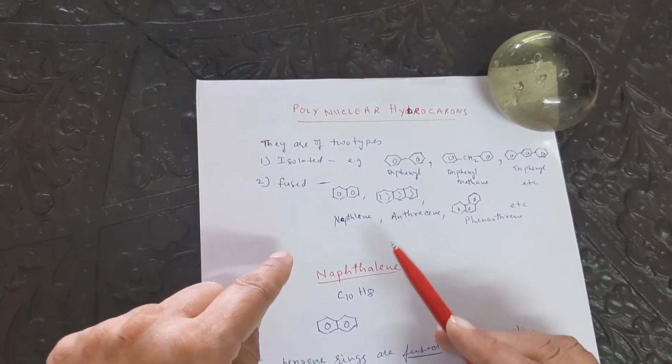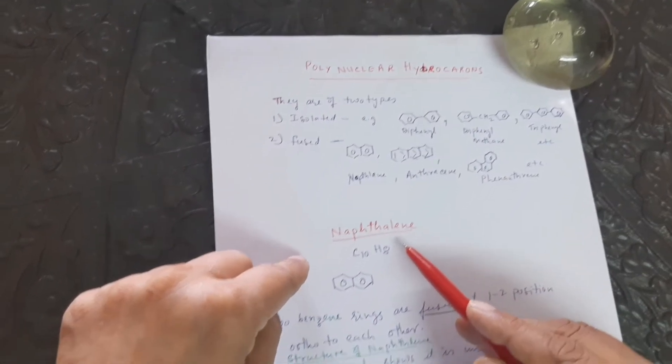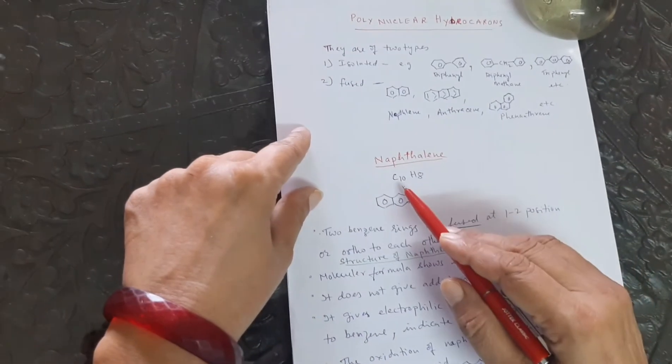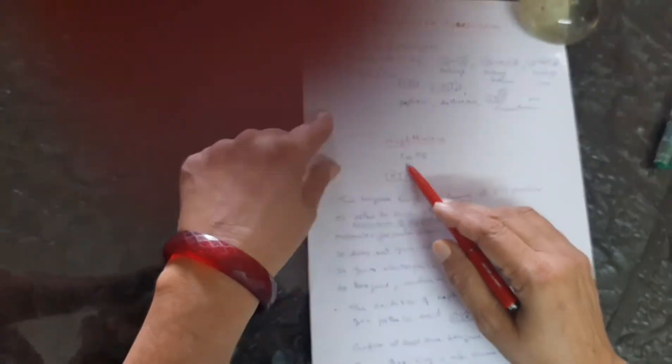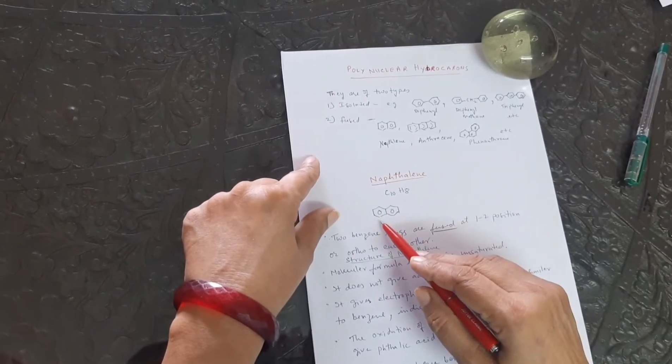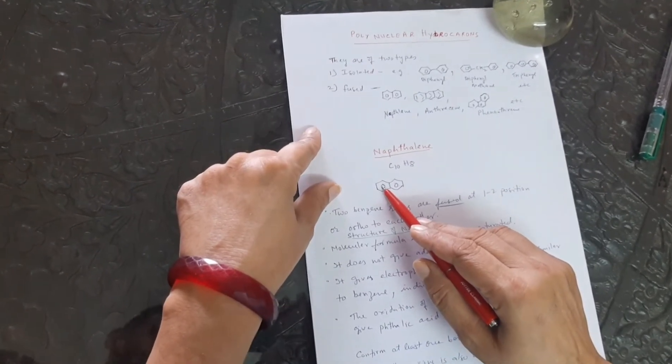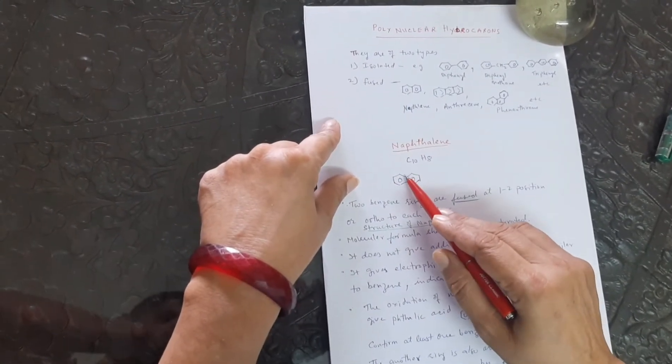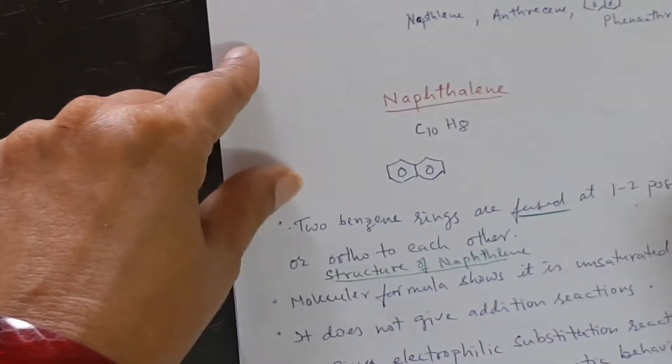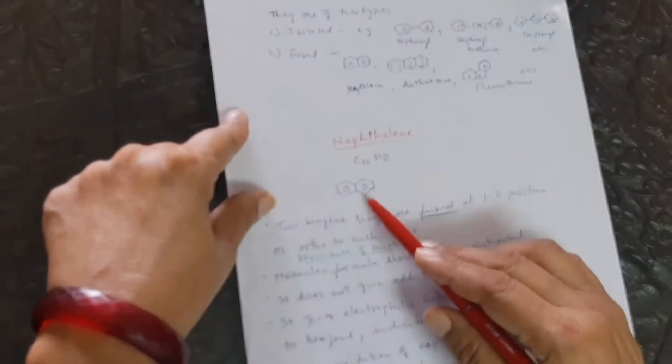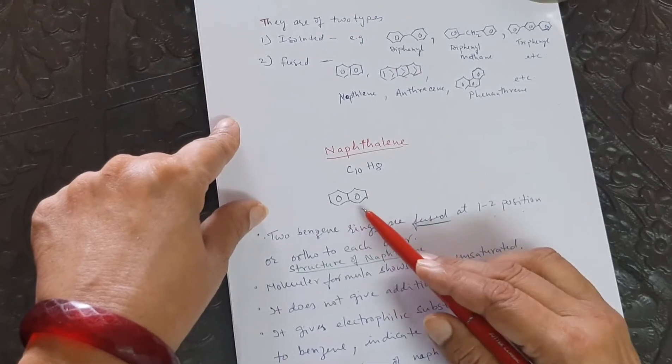Now we will study naphthalene. Naphthalene whose molecular formula is C10H8. And the structure given is this one, where 2 benzene rings are attached at 1, 2 position or we can say that they are ortho to each other.